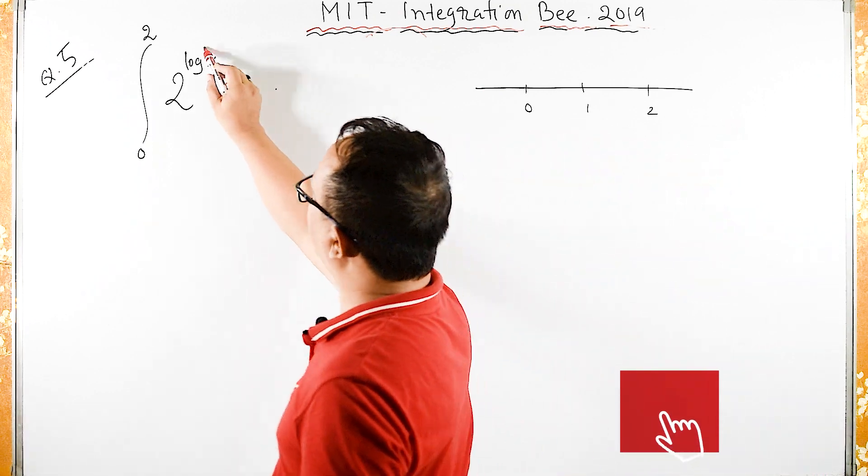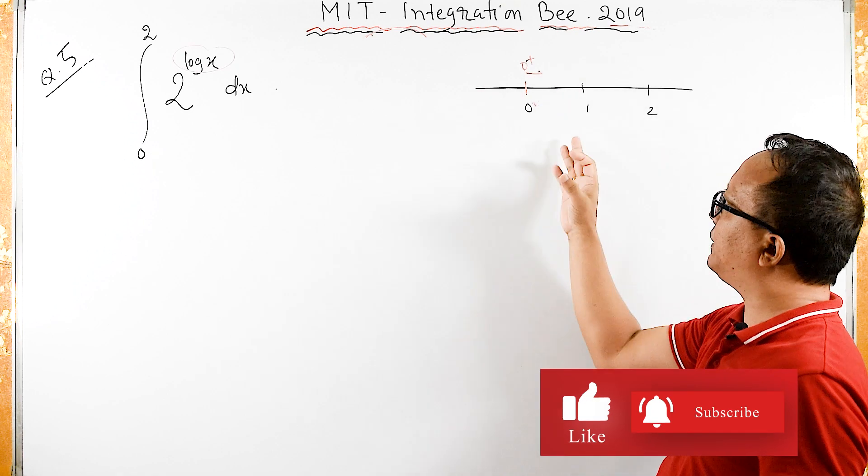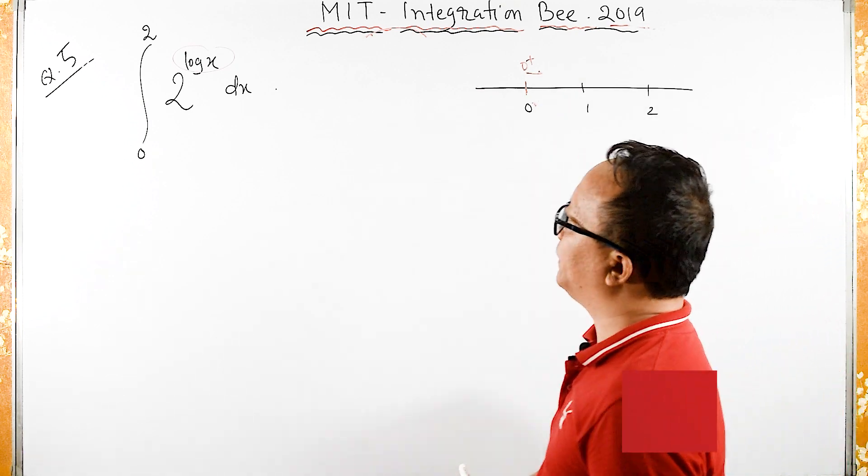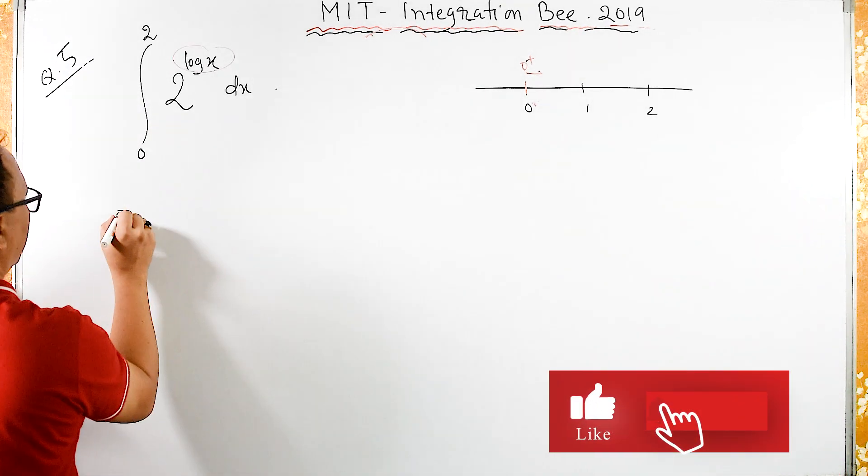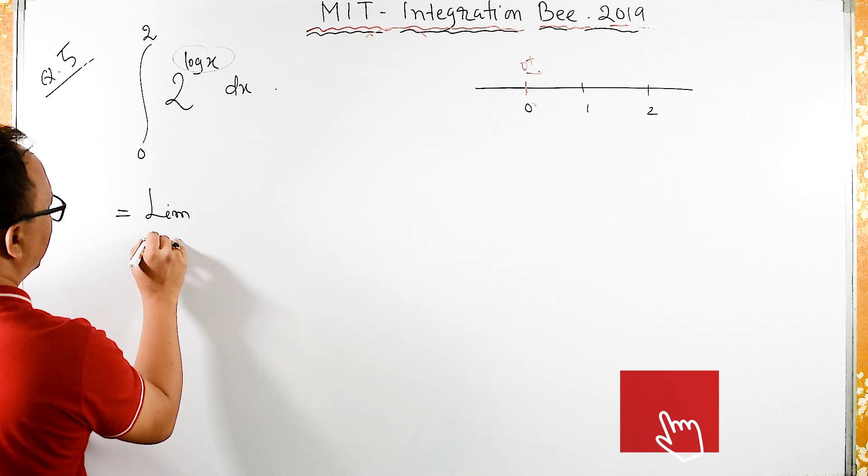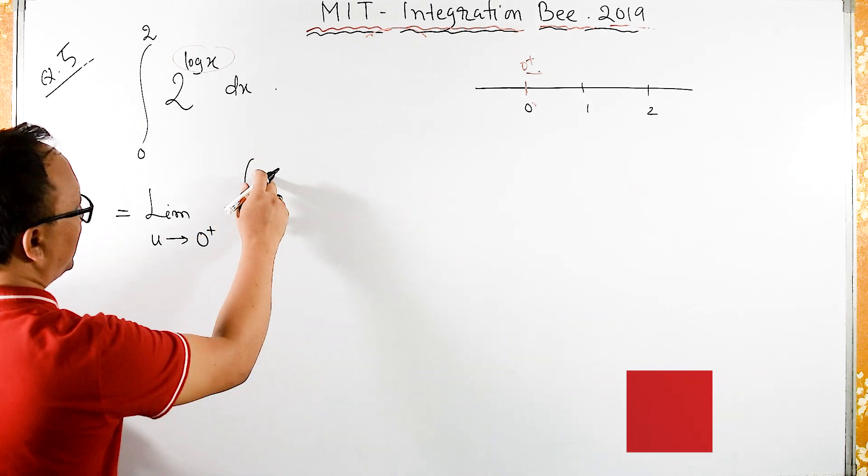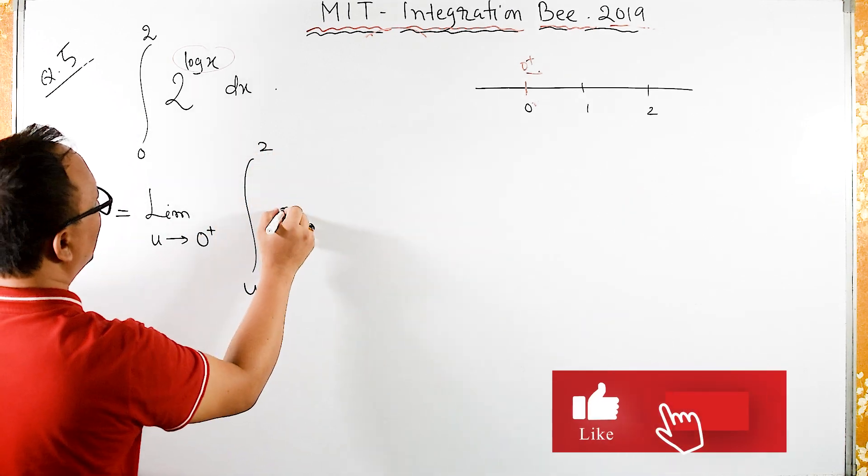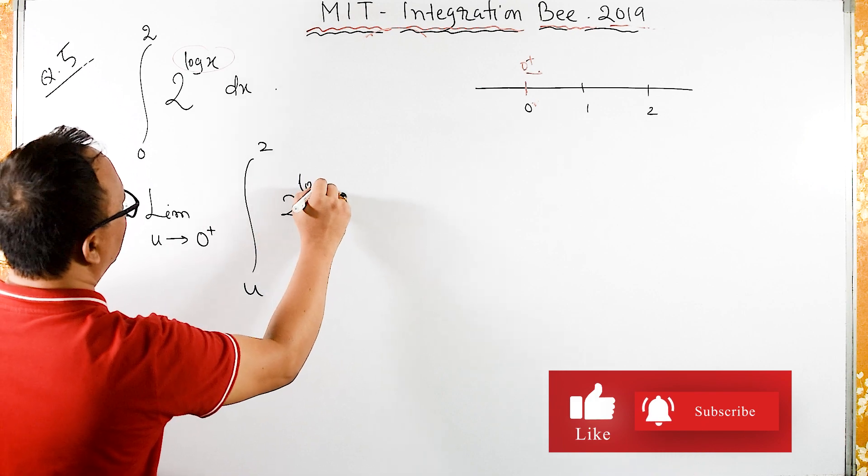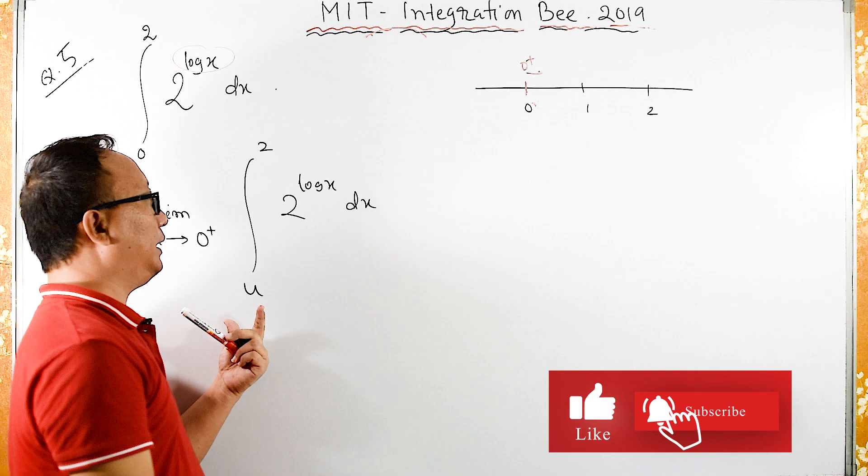But log x is not continuous at 0 plus, therefore it is an improper integral. So this can be written as limit u tends to 0 plus, integral from u to 2 of 2 raised to log of x dx.